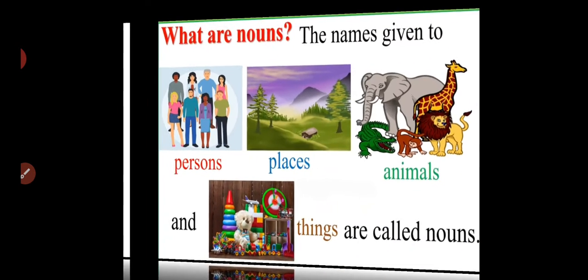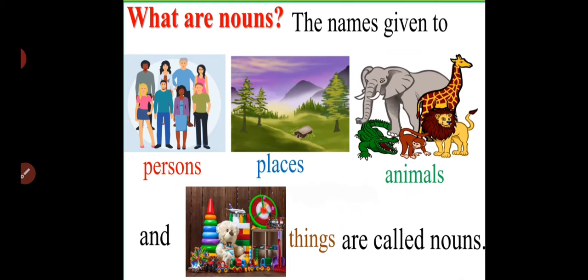Our first topic is nouns. Nouns are the naming words. Let us see the definition of a noun. The names given to persons, places, animals and things are called nouns.